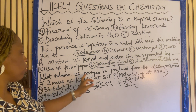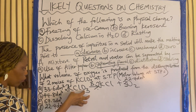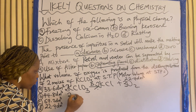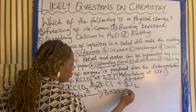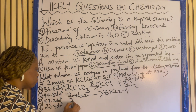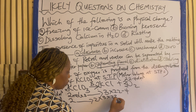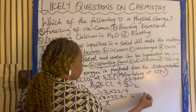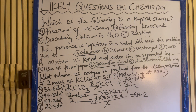The question asks what volume of oxygen is produced by the decomposition of 2 moles. We look at the moles and the volume of oxygen at STP. From the balanced equation, 2 moles of KClO₃ produce 3 moles of O₂. At STP, 2 moles produces 3 × 22.4 divided by 1, giving us 67.2 dm³. So the answer is C.